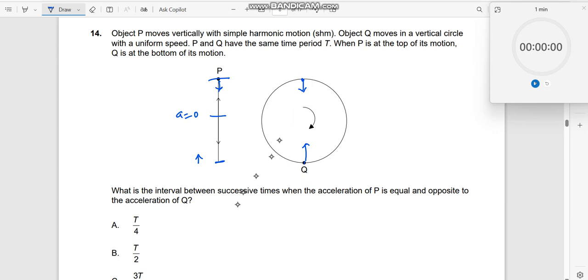What is the difference in the time? What is the interval between successive times when the acceleration of P is equal and opposite to the acceleration of Q? This would be seen when they are differing by half a time period.